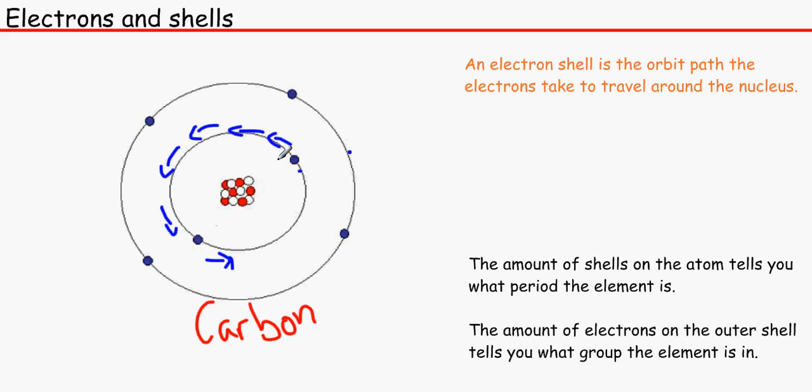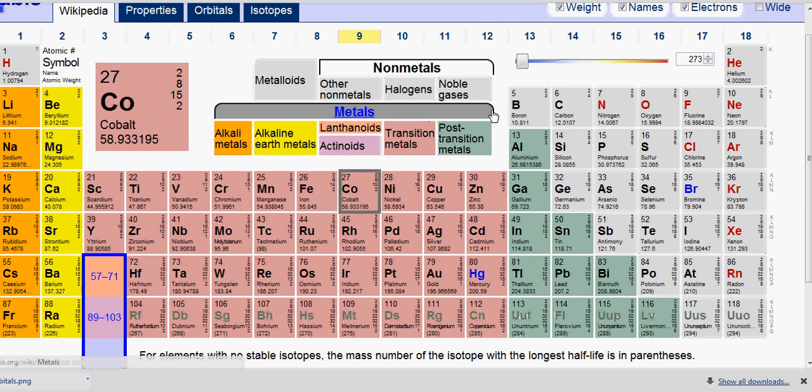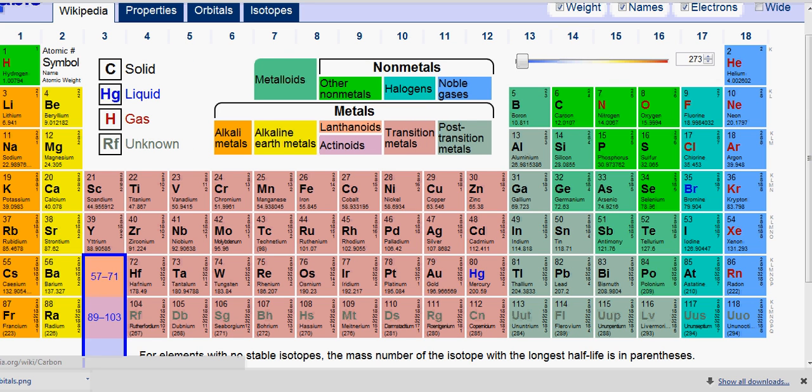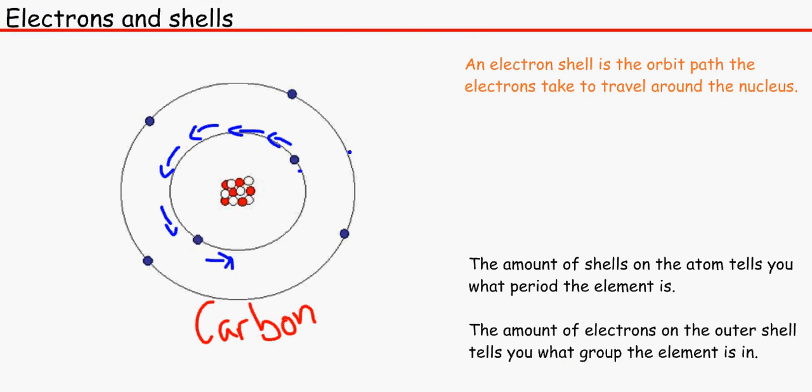Also it has got 1, 2, 3, 4, 5, 6 electrons. So therefore, on the periodic table, it should have 6 protons or 6 electrons over here as the atomic number.